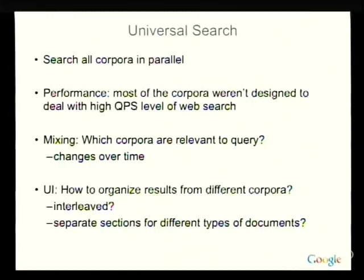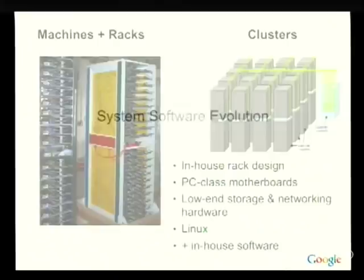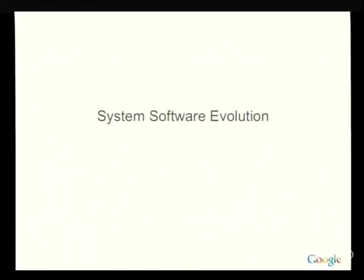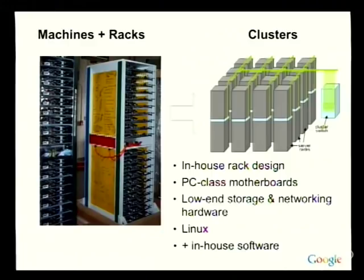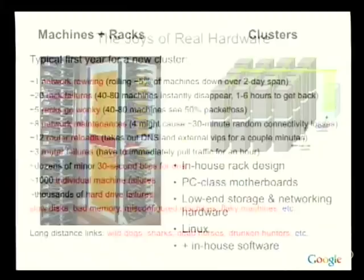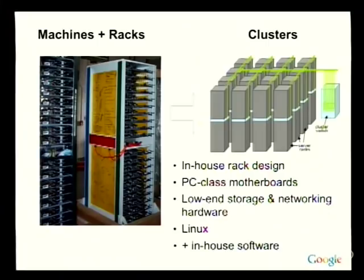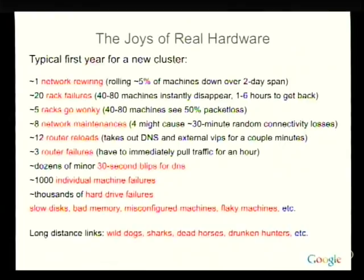Switching gears: this is a fairly modern incarnation of our rack design. We're back to not having cases on our machines — you get better airflow as it turns out. These are still commodity-class machines, running Linux plus a bunch of in-house software. They have a rack-level switch connecting to a central switch. In this kind of environment, you really have to have reliability and availability come from the software, not from the hardware.